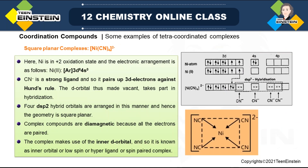Next example: nickel tetracyano complex, Ni(CN)₄²⁻. This is also tetra-coordinated but now it is square planar. Nickel here has +2 oxidation state: outside charge is 2−, and 4 cyano ligands give total −4 inside the coordination sphere. So x − 4 = −2, meaning x = +2. When nickel is in +2 state (3d⁸), configuration is 3d⁸. Cyano ligand (CN⁻) is also a strong field ligand so pairing will occur.